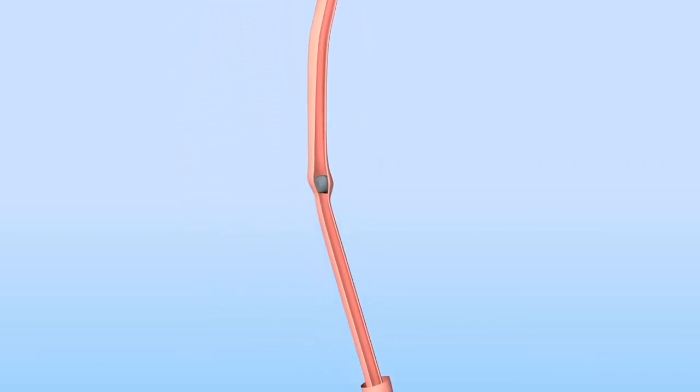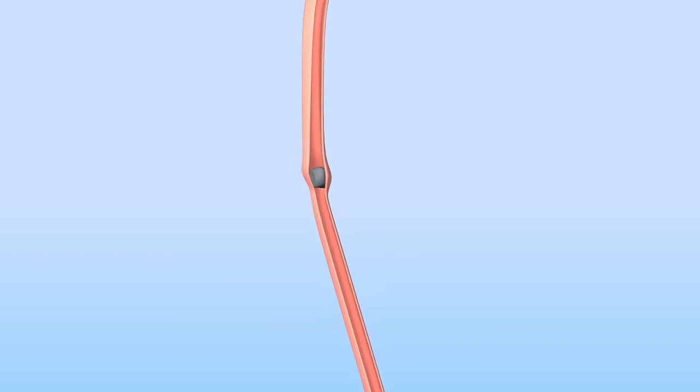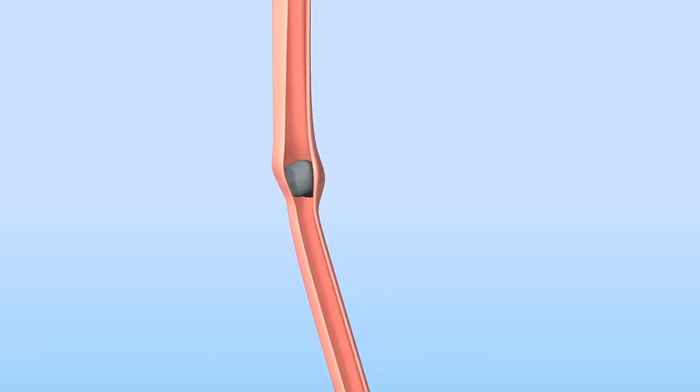If a stone gets stuck in the ureter, it causes pain in the loin and the groin region due to blockage of urine flow. This blockage can put strain on the kidney and predispose the patient to infection. This can make some people so sick that they need to be admitted to the intensive care unit.